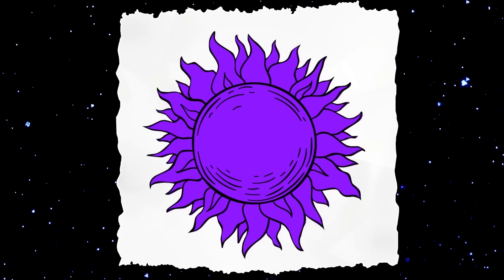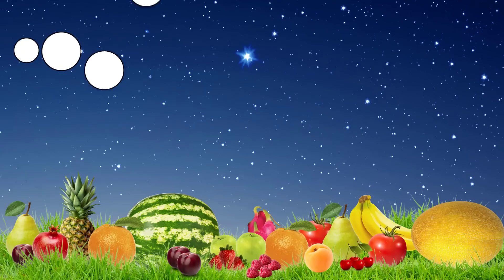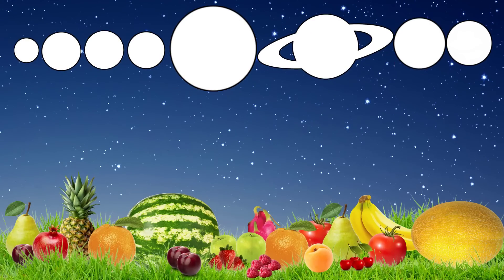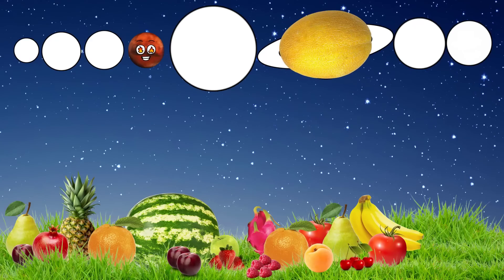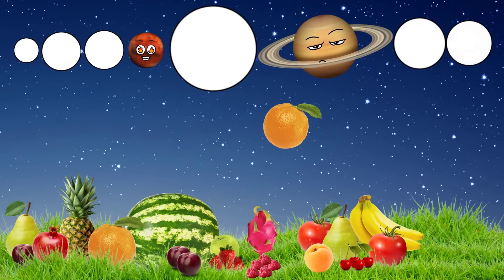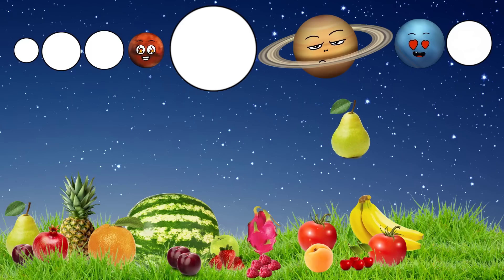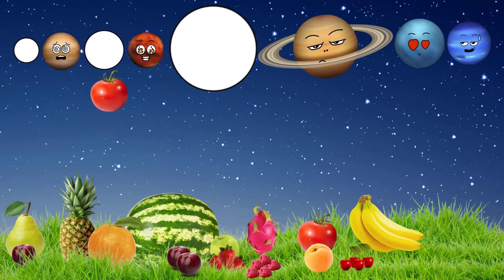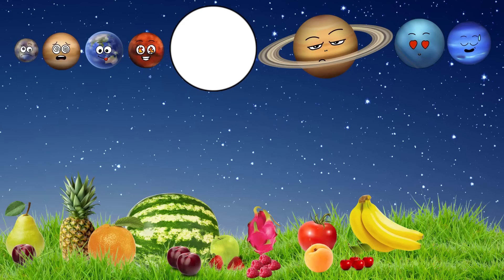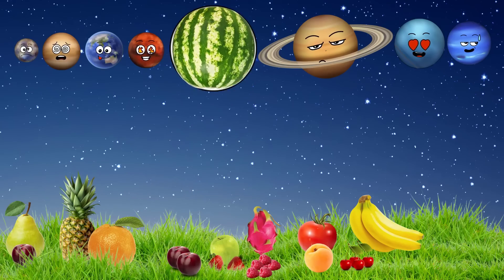Purple sun. Looks very cool. Purple sun. Apple. Mars. Melon. Saturn. Orange. Uranium. Pear. Neptune. Venus. Tomato. Ground. Strawberry. Mercury. Watermelon. Jupiter.